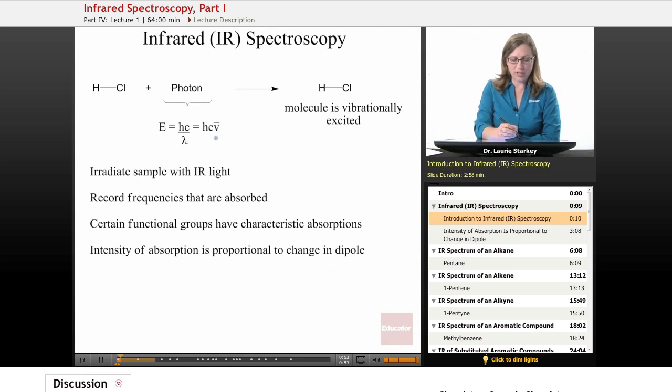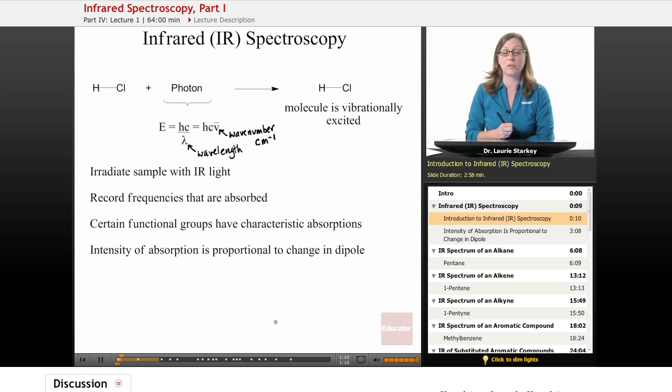We're going to be using this V with a line over it, which is short for wave number. These are in units called reciprocal centimeters, so it's centimeters to the minus one. They have an inverse relationship, so that's where the negative one comes from. We're going to be using these numbers, reciprocal centimeters, to describe the photons of light that we're using.